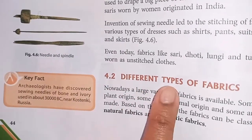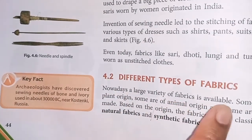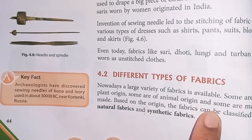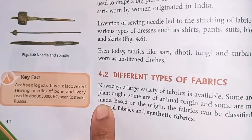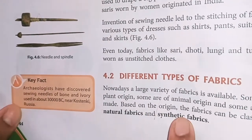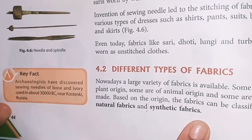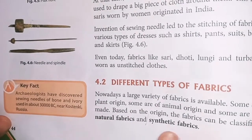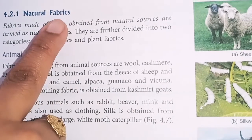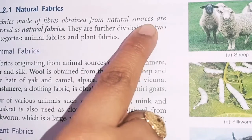Next is different types of fabrics. Nowadays, a large variety of fabrics is available. Some are of plant origin, some are of animal origin, and some are man-made. Based on the origin, fabrics can be classified into natural fabric and synthetic fabric. Natural fabric means which we find in nature, and synthetic fabrics are man-made fabrics. We will first study natural fabrics — fabrics made of fibers obtained from natural resources.